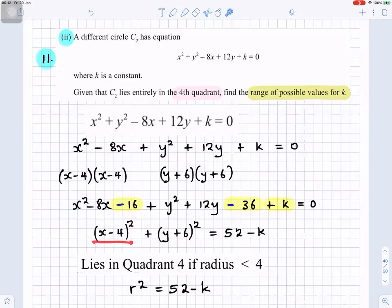So x minus 4 squared plus y plus 6 all squared is equal to minus 16 minus 36 is minus 52. You take minus 52 to the right, it becomes plus 52. You take plus k to the right, it becomes minus k. So that's equals to 52 minus k.